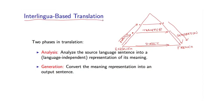This is what's called interlingua-based translation. In this case there are just two phases. In the first step, the analysis step, we're going to analyze the source language sentence into what we hope is a language-independent representation of its meaning. We think of some point at the apex of this pyramid as being a language-independent representation of meaning. In the generation step, we take this language-independent representation and generate the foreign language. Critically, this depends on some definition of interlingua, which is a representation of the meaning of languages that is independent of language.